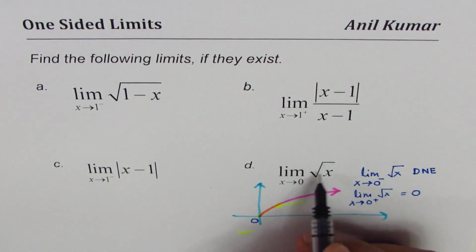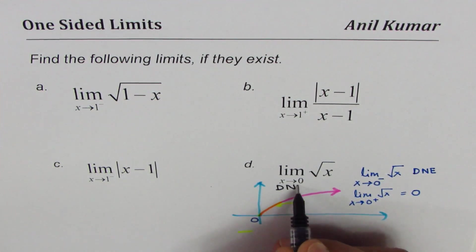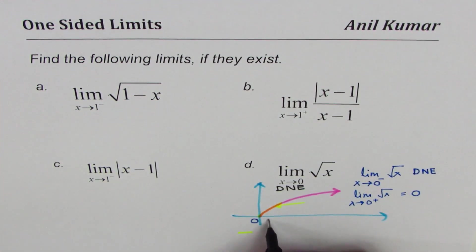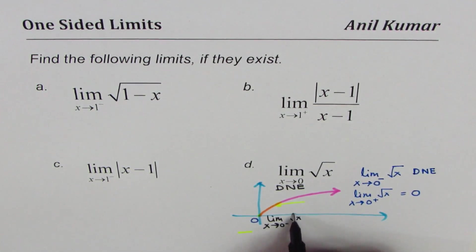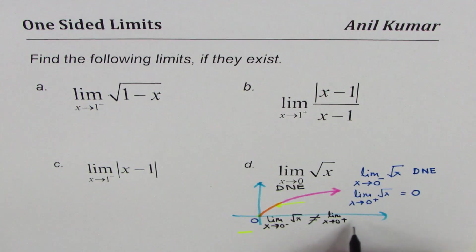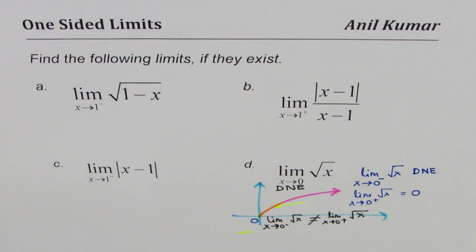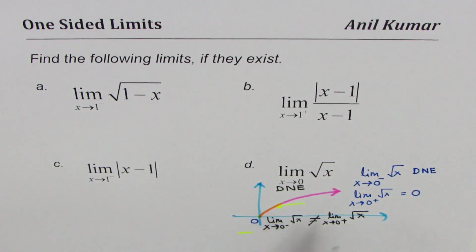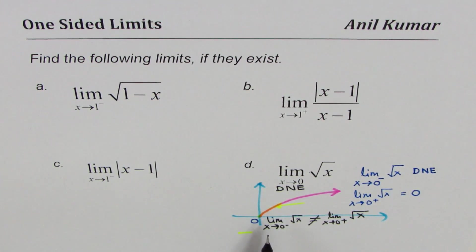When we say find the limit at x equals 0, we mean both the left and right side limits should be equal. Since they are not equal, this limit does not exist. The reason is that the limit as x approaches 0 from the left for square root of x is not equal to the limit as x approaches 0 from the right. You can only approach it from the right side, and in that case the limit is 0.